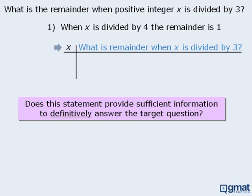So what are some possible values of x? If we get a remainder of 1 when x is divided by 4, then x could equal 5. What is the remainder when x is divided by 3? Well, 5 divided by 3 is equal to 1 with remainder 2, so the answer is 2. What are some other possible values for x? If we get a remainder of 1 when x is divided by 4, then x could also equal 9. When 9 is divided by 3, we get 3 with remainder 0, so the answer here is 0.